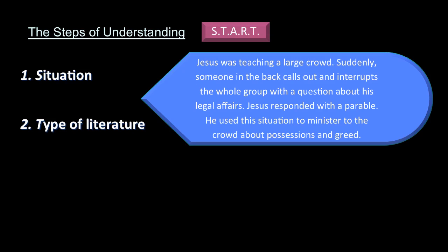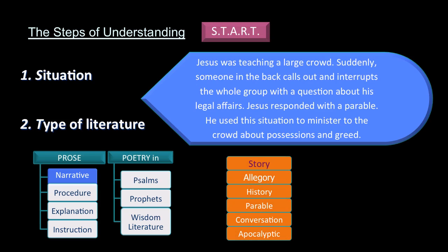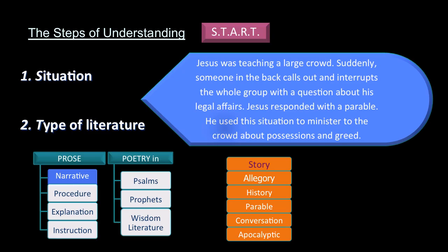The next step is the type of literature. In any language we get prose and poetry, and the Bible is also written in both. In this case we realize it's a narrative, and narratives can be divided into stories, allegories, history, etc. In this case it's a story — so we have prose, it's a narrative, and it comes to us as a story.